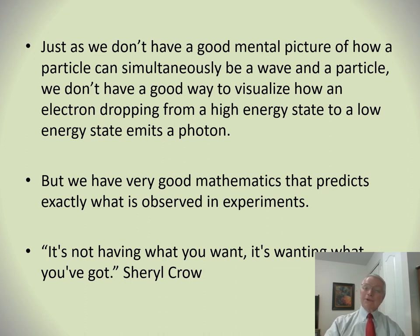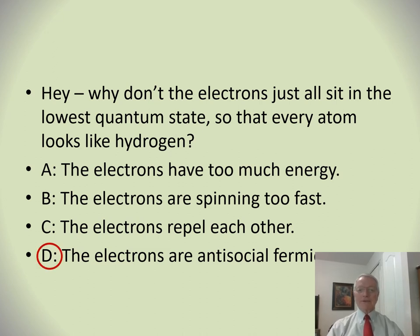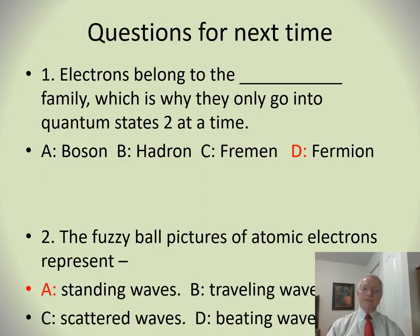Here's one last quiz question leading into next time: why don't all electrons just sit in the lowest quantum state — the ground state — so that every atom looks like hydrogen and there's no chemistry? The answer is that electrons are antisocial fermions. We'll talk about fermions and bosons in more detail later, and in particular we'll talk about fermion behavior and the periodic table next time. See you in a couple of days.